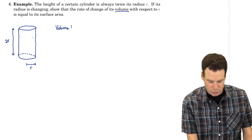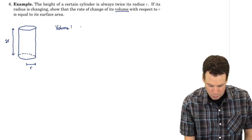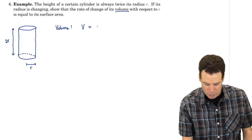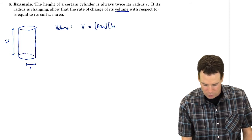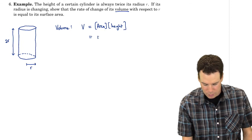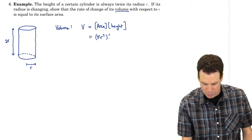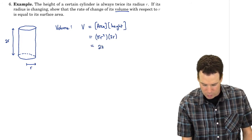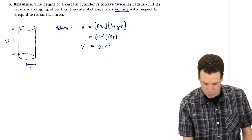This is a circular cylinder, so the volume V equals the area of the cross-section times the height. The area is πR², and the height is 2R, so our volume is 2πR³.